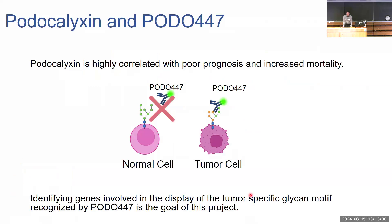A little bit of background on podocalyxin and POTO447. Podocalyxin is a glycoprotein normally expressed on the surface of podocytes located in the kidney and is involved in kidney filtration. However, in cancer, it can become highly overexpressed as well as expressed in an aberrantly glycosylated form. Podocalyxin is highly correlated with poor prognosis as well as an increased mortality rate, making it a great target for therapeutics.